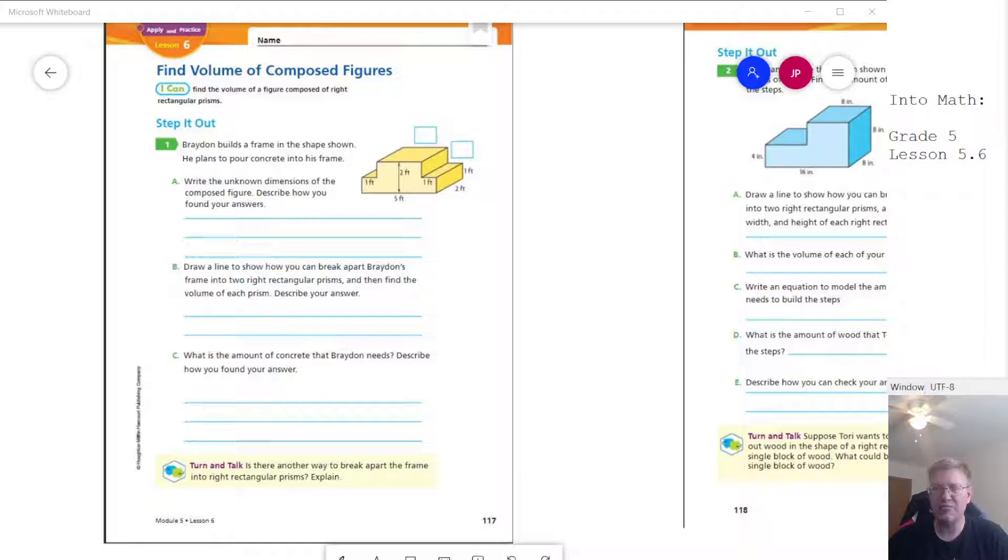Over the last week, we've been working with finding the volume of rectangular prisms. Today, we're going to continue doing that by taking a particular shape and breaking it apart into different rectangular prisms, finding the volume of those and then adding them together to get our final answer.